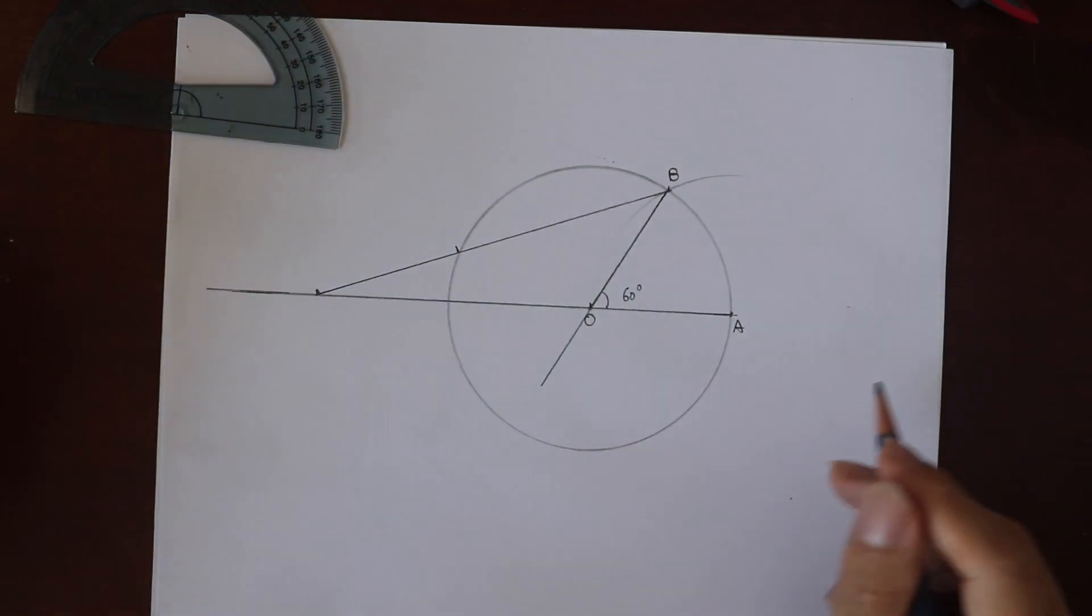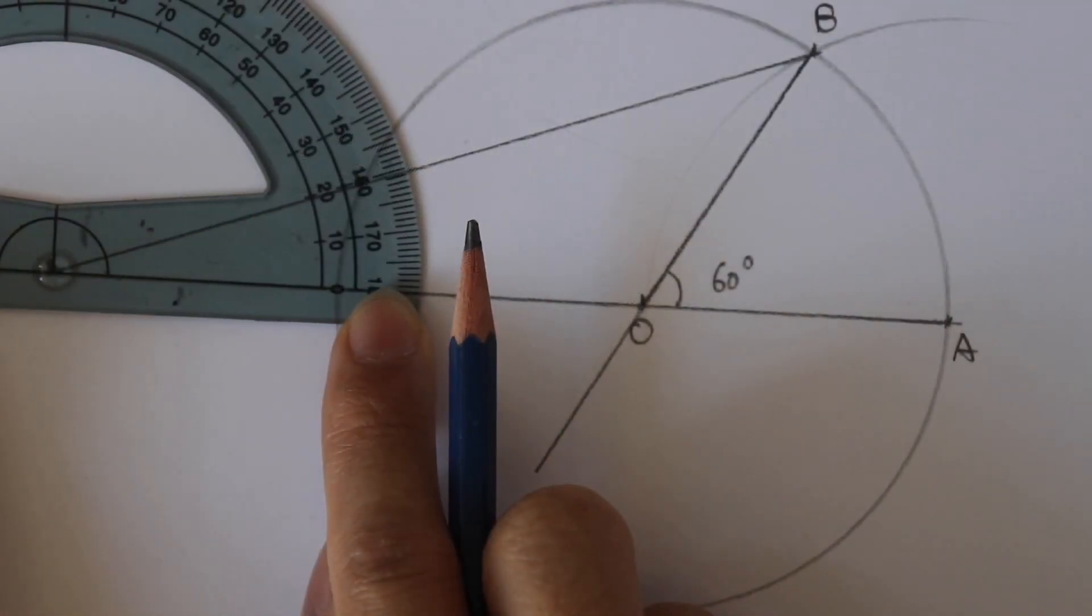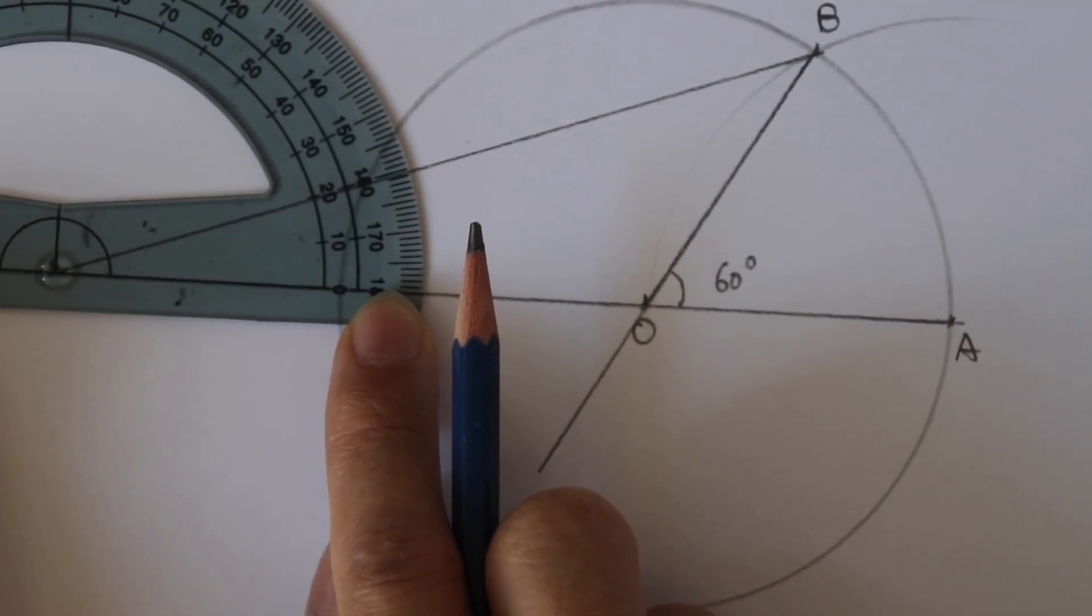To double-check, let me use a protractor. We see that it is pretty close to 20 degrees. So it really works.